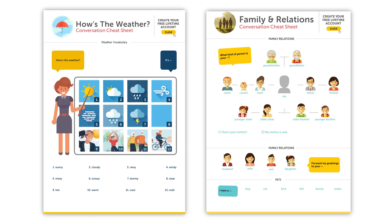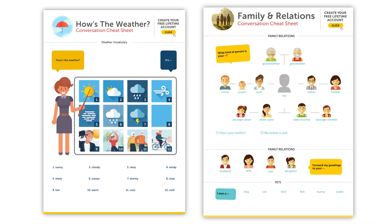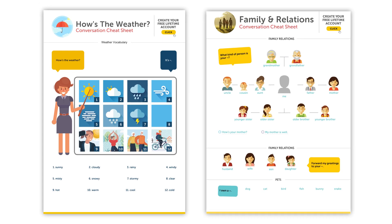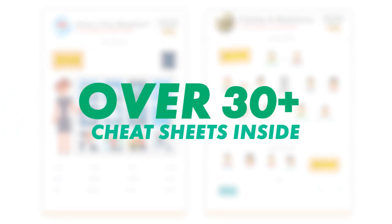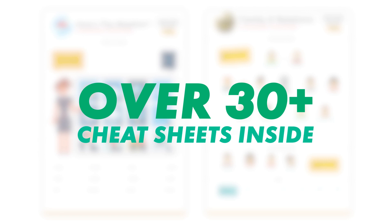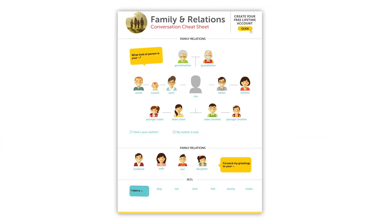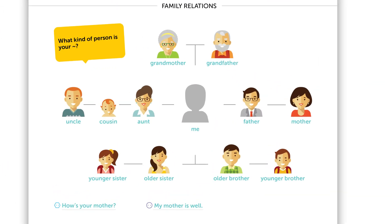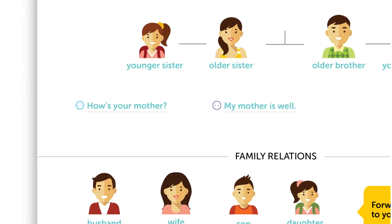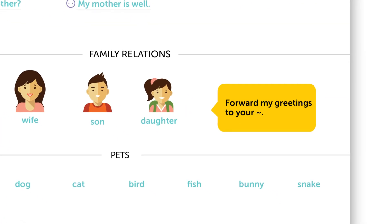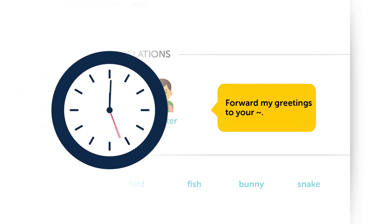These cheat sheets cover must-know topics like weather, family, talking about hobbies, and much more. There are over 30 cheat sheets inside. Inside each cheat sheet, you get the words, phrases, and helpful sentence patterns related to the topic that you can quickly review whenever you have a minute or two.